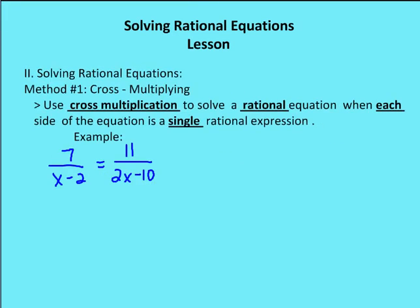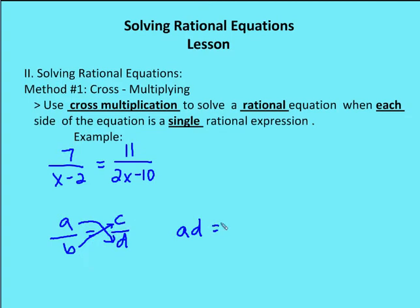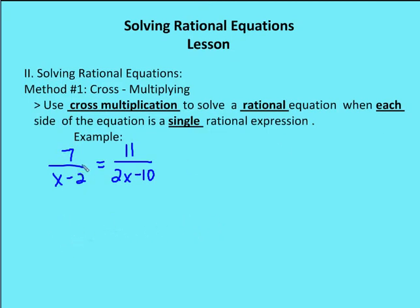Now, solving rational equations — I have three methods for you, and you can use them in different situations. Method number one is cross multiplication. I can use cross multiplication when each side of the equation is a single rational expression. If I have a over b equals c over d, when I cross multiply, I get a times d equals b times c — the numerator on the left times the denominator on the right equals the denominator of the first times the numerator of the second.